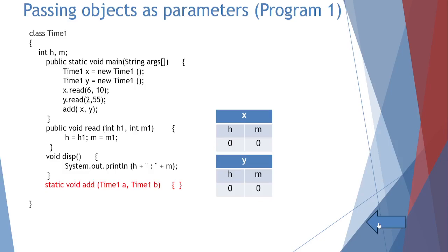The add method receives two objects as parameters. In main, we create two objects x and y. x has instance variables h and m, y also has h and m, initialized to zero by the constructor. x.read is called — 6 and 10 are passed as actual parameters, stored in h1 and m1, so x gets 6 and 10. Then y.read is called with 2 and 55, so y gets those values.